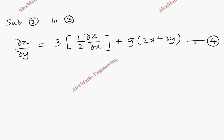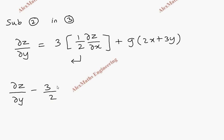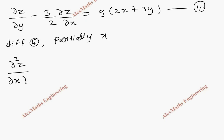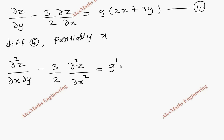It is better to take that term to the other side and name it as the fourth expression: dou z by dou y minus 3/2 into dou z by dou x equal to g of (2x + 3y). Now we differentiate this fourth expression partially with respect to x. So this will be dou square z by dou x dou y minus 3/2 into dou square z by dou x square equal to g dash of (2x + 3y) into 2. Let's keep this as the fifth expression.